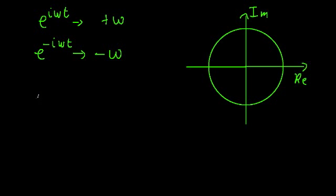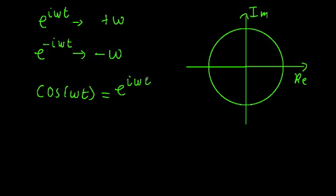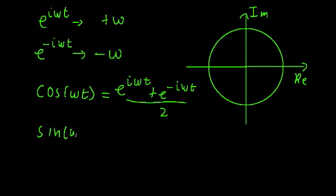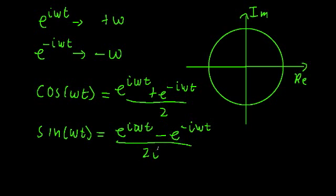We also learned two interesting things about the sine and cosine functions in the complex plane. We can write cosine omega t as equal to e raised to the i omega t plus e to the negative i omega t, all divided by 2. And sine omega t is equal to e raised to the i omega t minus e to the negative i omega t, all divided by 2i.